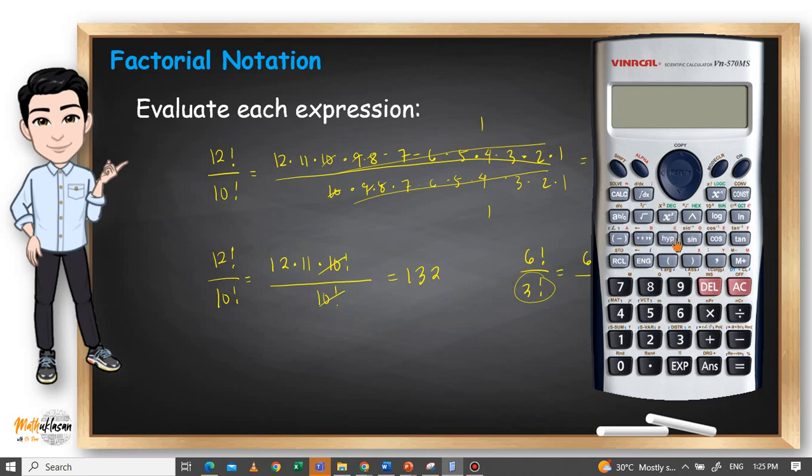If you're looking for 5 factorial, all you have to do is select 5. Let's turn it on first, of course. So we have 5 here, and since it's located in the second floor of this key, I'll choose shift, then choose this one for the factorial notation to come out. Now 5 factorial, just select equal, and you have 120.